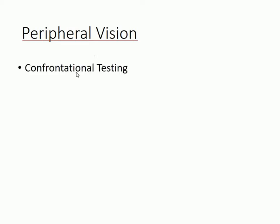How do we test peripheral vision? In the bedside situation, we can do confrontational testing, which is not the topic of this lecture. Automated testing is the most common way of accurately testing someone's vision nowadays. And then there's the Goldman visual field, which we'll touch on briefly — it is in some ways the gold standard, but it is used far less frequently now.